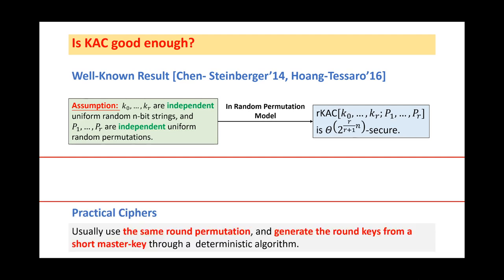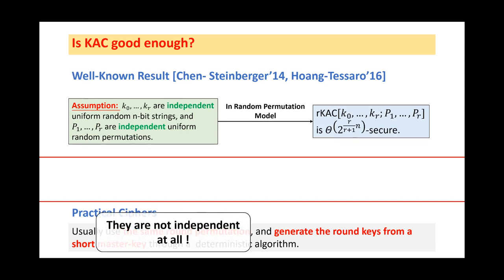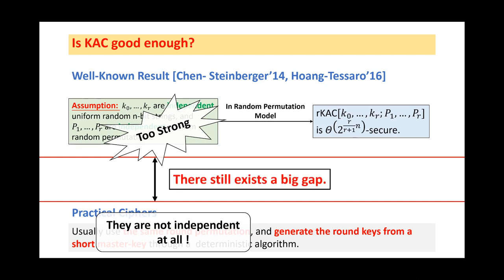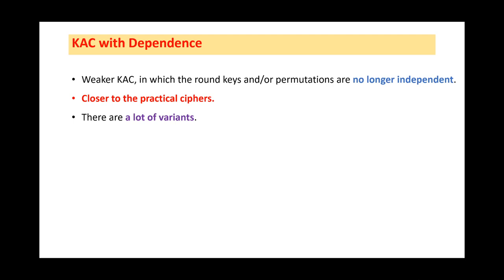However, for the reasons of efficiency and cost, practical ciphers usually use the same round permutations and generate the round keys from a short master key through a deterministic algorithm. Obviously, the round permutations and round keys are not independent at all. Thus, the assumption in the well-known result is too strong, and there still exists a big gap between them. To reduce such a gap, we have to consider the KAC with dependence. In such a construction, the underlying components are no longer independent, and it is closer to the practical ciphers. Obviously, there are a lot of variants.